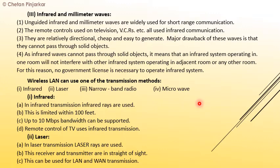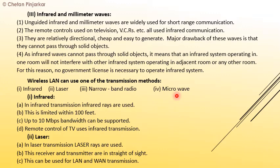Wireless LAN uses one of the following transmission methods: infrared, laser, narrow band radio, and microwave. These are the different methods used for wireless LAN connections.